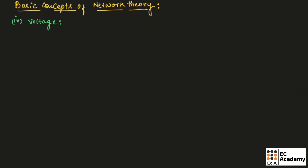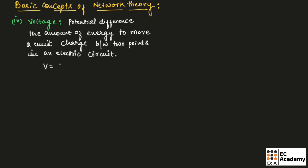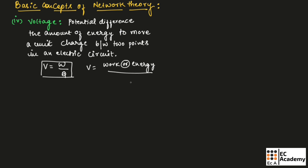Now, let us understand voltage. Voltage is also known as potential difference. We can define voltage as the amount of energy to move a unit charge between two points in an electric circuit. We can write voltage as V is equal to W by Q — it is the ratio of work done or energy divided by charge.